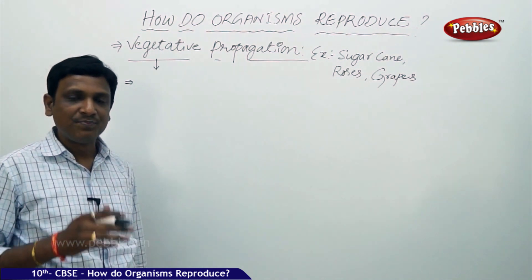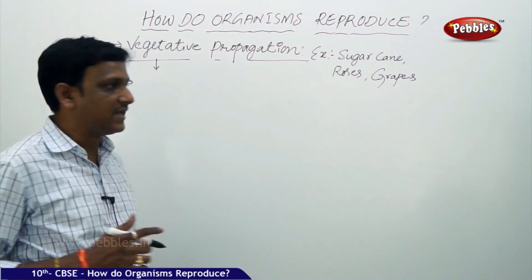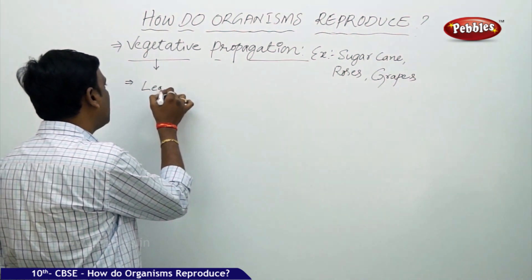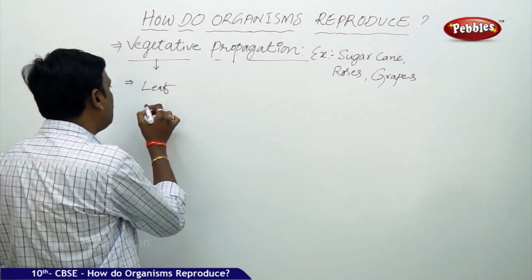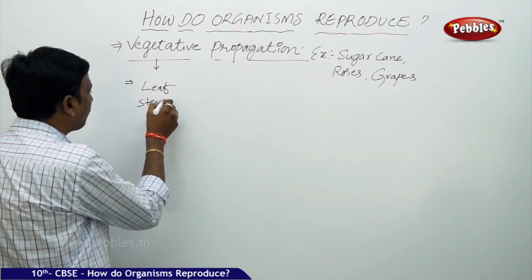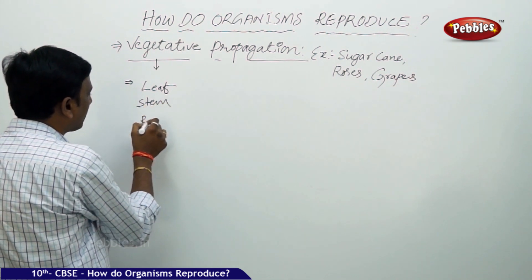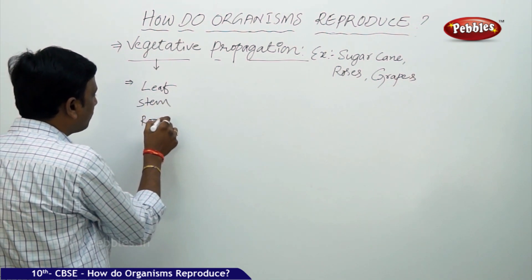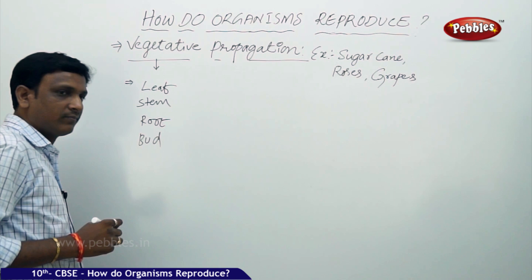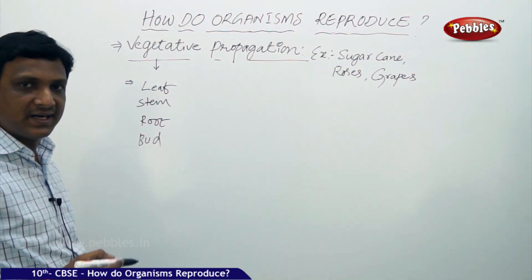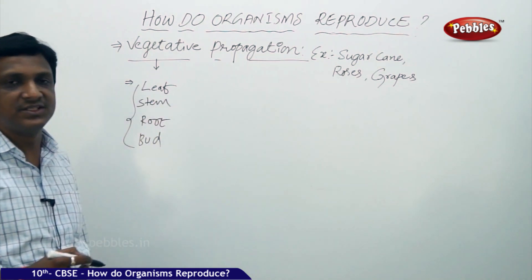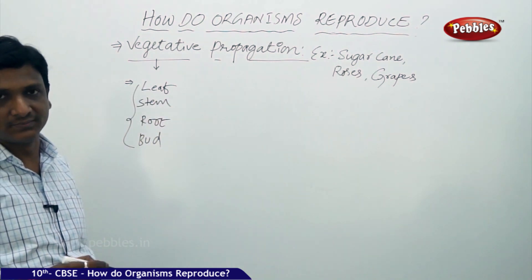Apart from the flower, if a plant is able to produce a new plant from its leaf, stem, root, or bud, you call it vegetative propagation.